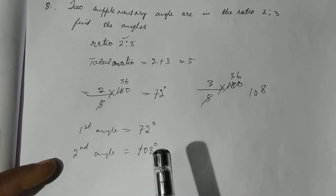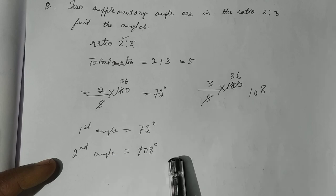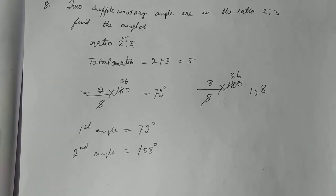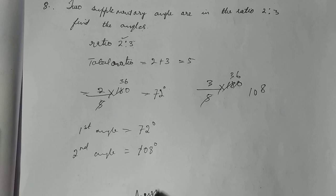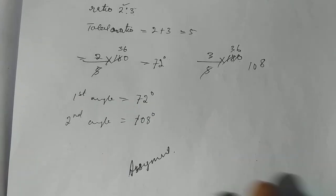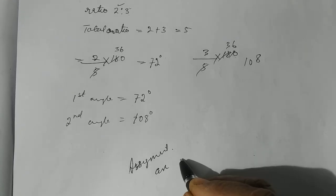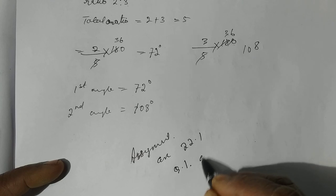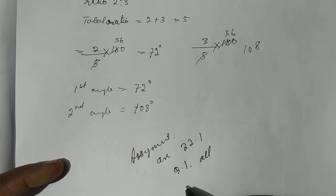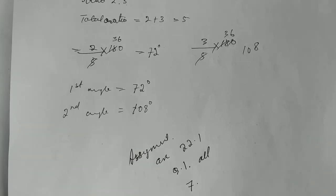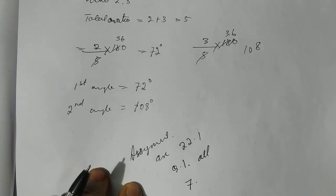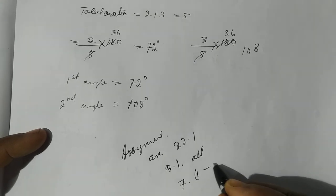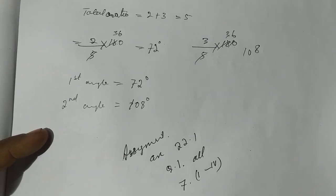The angles are supplementary. The results from the straight angle. Supplementary angle. This is 30. Assignment. Exercise 22.1, Question number 1, all. Question number 7, sub-numbers 1, 2, 4.